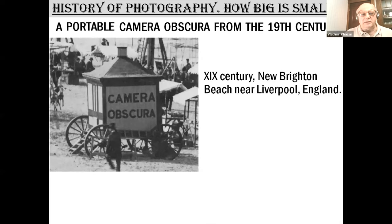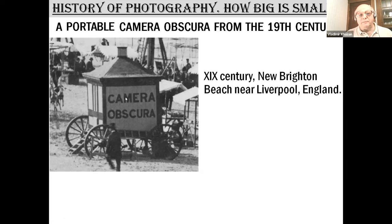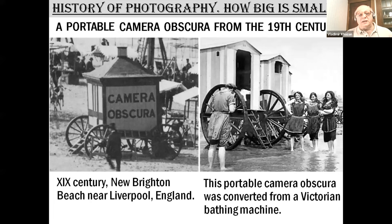Camera obscura was made even smaller, and it was possible to carry it anywhere the horse could go, because this cabin is horse-driven. For that reason, this camera obscura was named portable. There is a very interesting and funny fact about this camera obscura: it was converted from a bathing machine — the same kind of cabin that is horse-driven into the water, where people would change, go to swim, and then the same horse brought them back to shore.